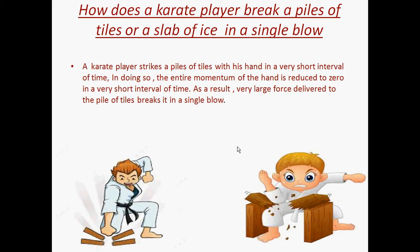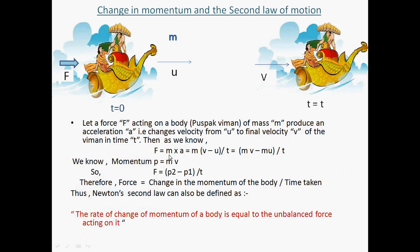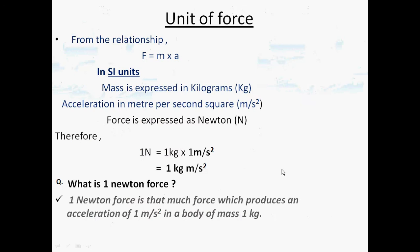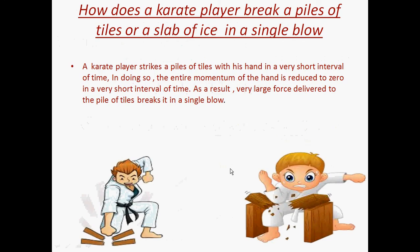This karate player reduces the momentum change time. We know the formula: the rate of change of momentum is P2 minus P1 upon T, that means MV minus MU upon T. As I told you, the rate of change of momentum is known as force. So if the time is less, the force will be more. Force equals MV minus MU upon T. If T is less, the force applied will be more. They reduce the momentum change time, so a large force is applied on the wooden slab and it immediately breaks.